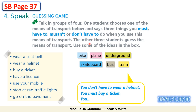Now I will play this game with you. Which means of transport must you wear a helmet when you use it? The bike and the skateboard. Which means of transport must you have a license to use? The plane, underground, bus, and tram. Well done students — all your answers are correct.